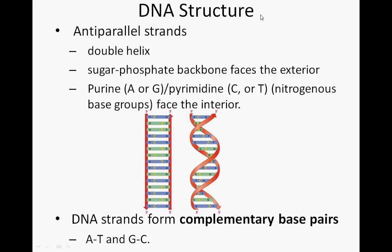DNA structure is particularly important and has a lot to do with the fact that it's a very stable molecule. DNA structure is anti-parallel, meaning there are two separate chains of deoxyribonucleotides facing each other, one upside down and backwards relative to the other — that's what anti-parallel means. These don't stay in a straight line; they interact on a secondary structural level and twist into the double helix structure.